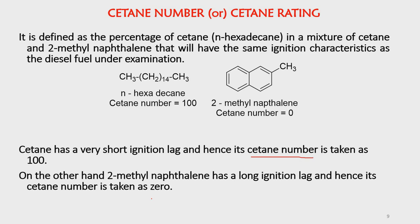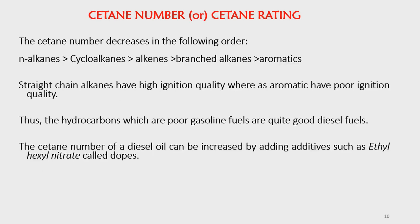Greater the cetane number, greater will be the efficiency of the fuel and less will be the knocking. N-alkanes have low knocking characteristics and greater cetane numbers, followed by cycloalkanes, branched alkanes, and aromatic compounds. Straight-chain alkanes have high ignition quality, whereas aromatic compounds have poor ignition quality. Hydrocarbons that are poor gasoline fuels are very good diesel fuels. In petrol engines we prefer branched hydrocarbons, and in diesel engines we use linear alkanes. Thank you.